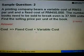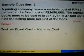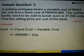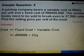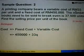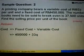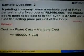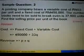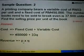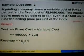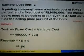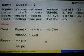Let's start off with cost equals fixed cost plus variable cost. Fixed cost is given as RM450,000 plus the variable cost. The cost price per unit is 33, so we have 33 times Q. Then, revenue is equal to P times Q, where P is the selling price and Q is the quantity. So revenue equals PQ.